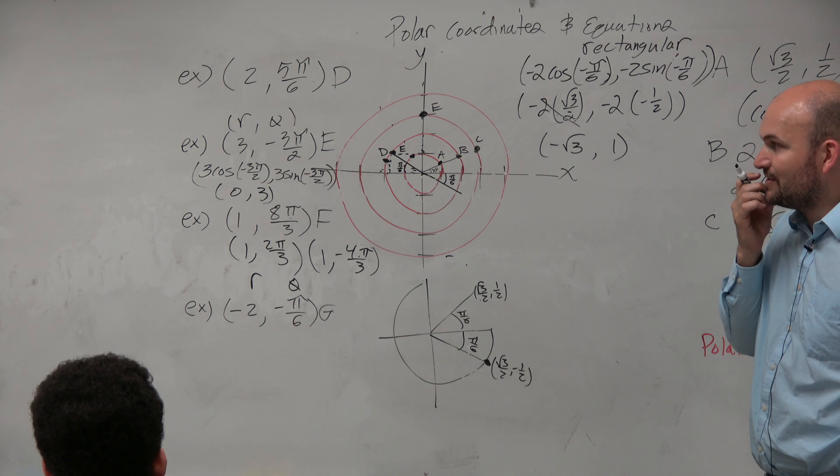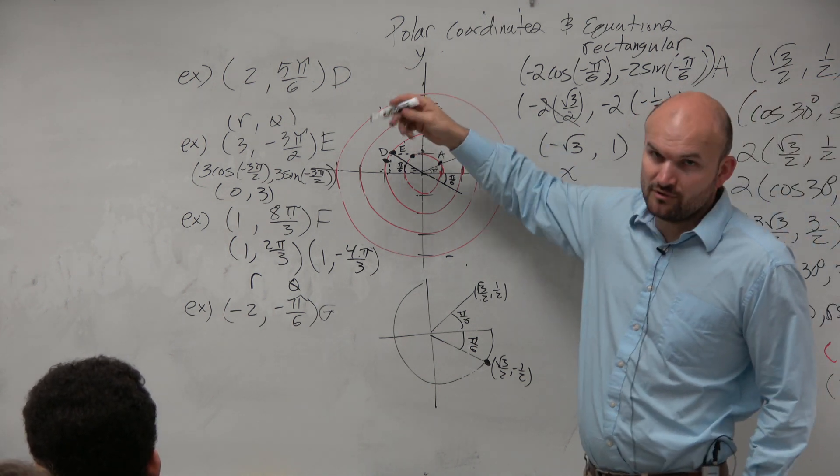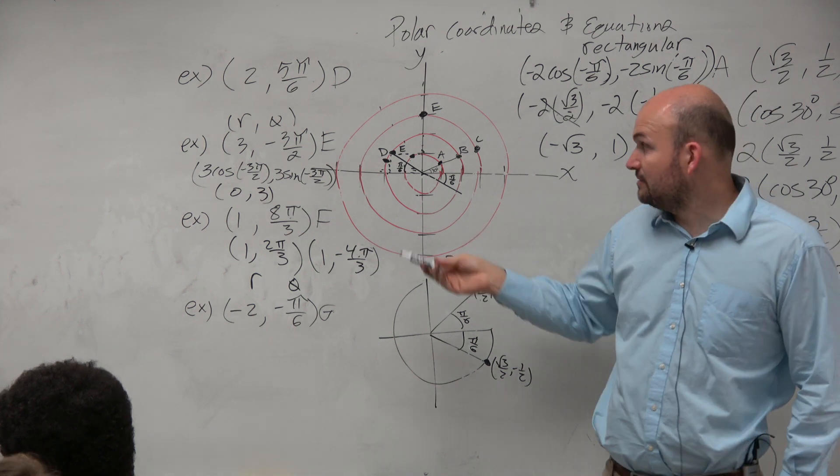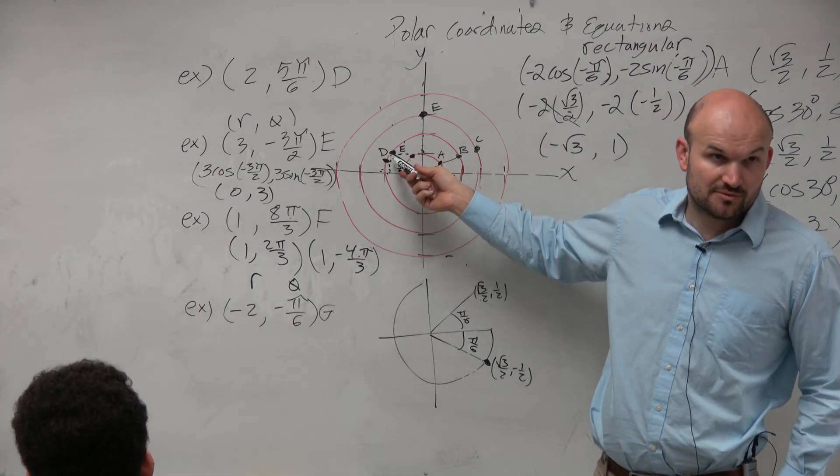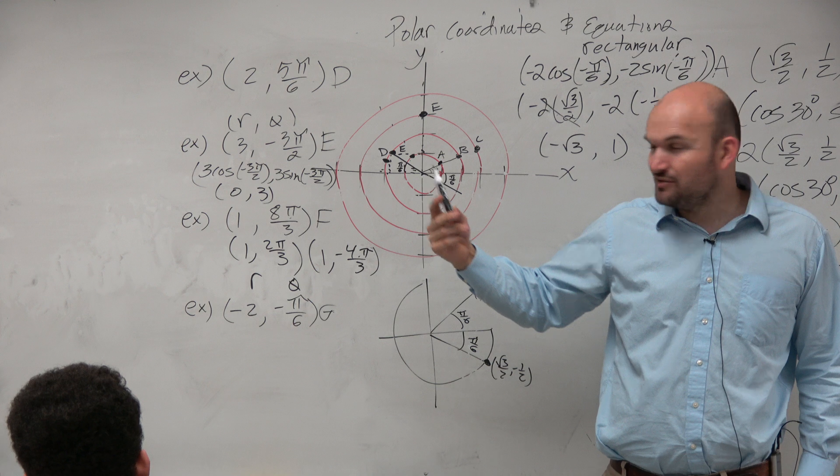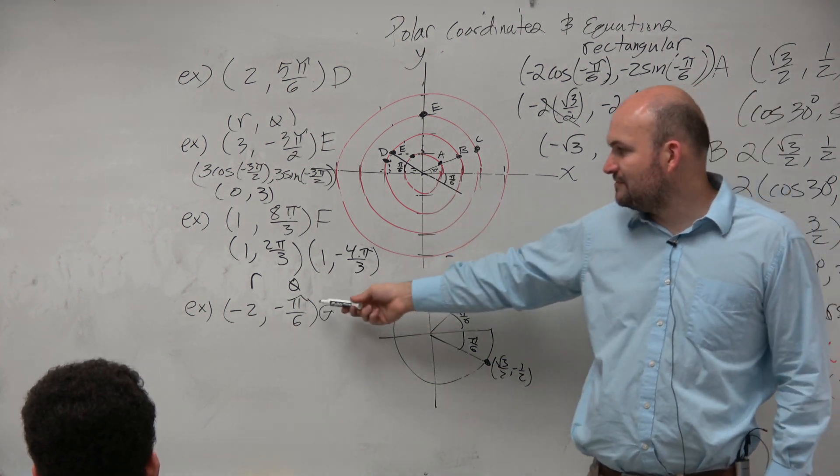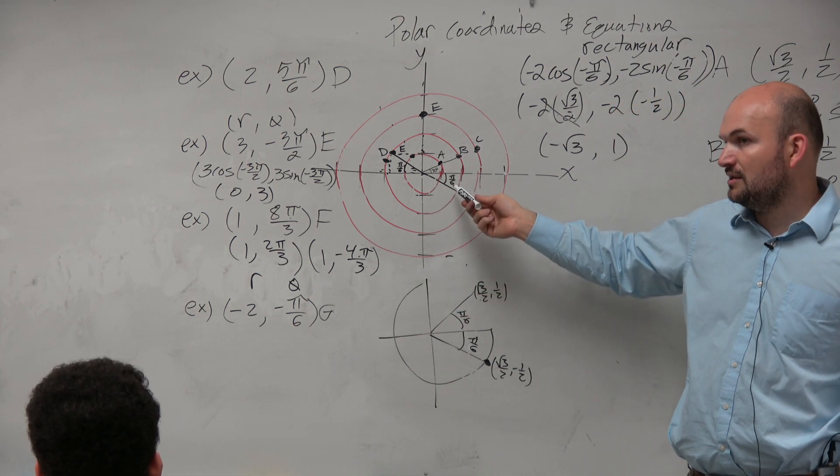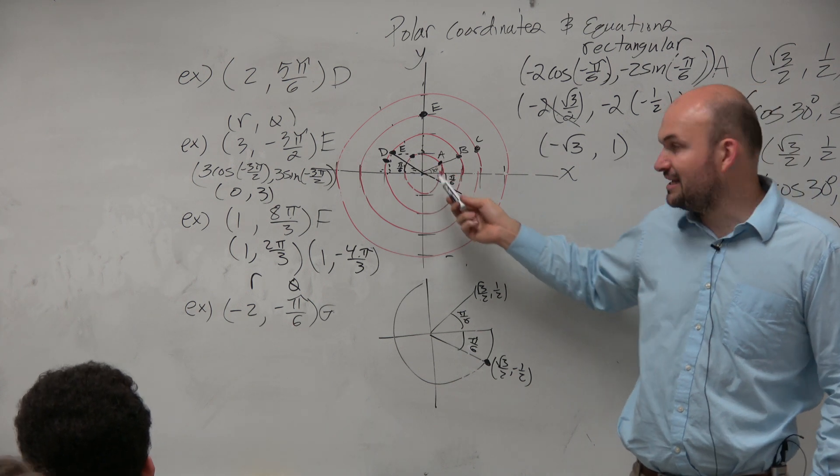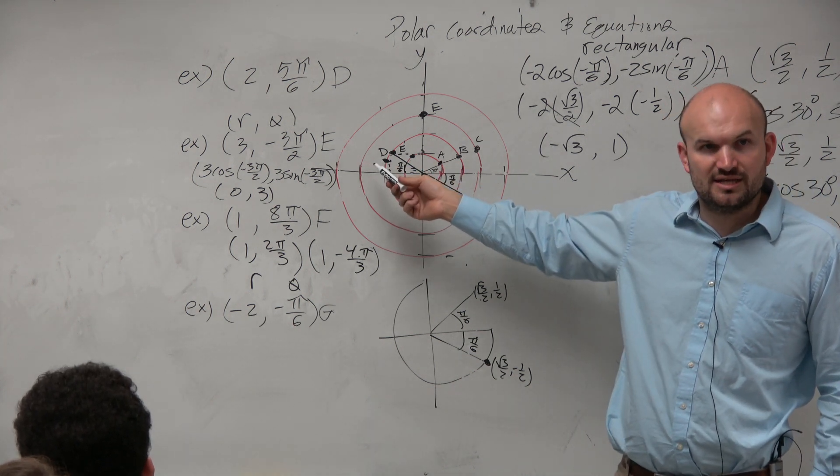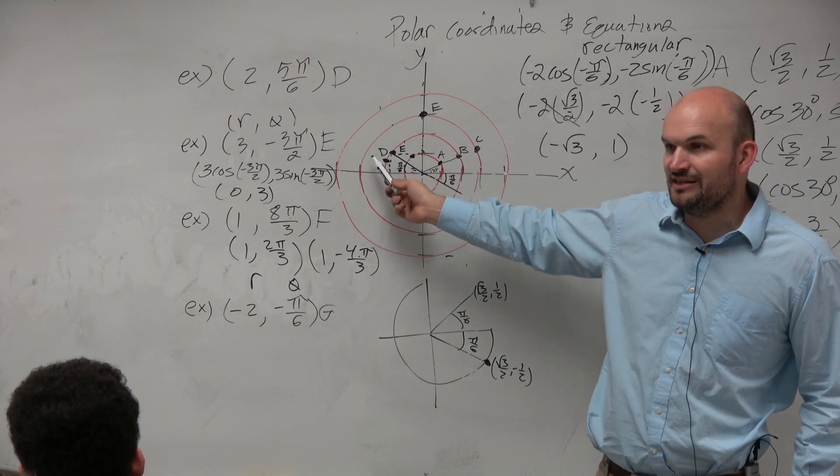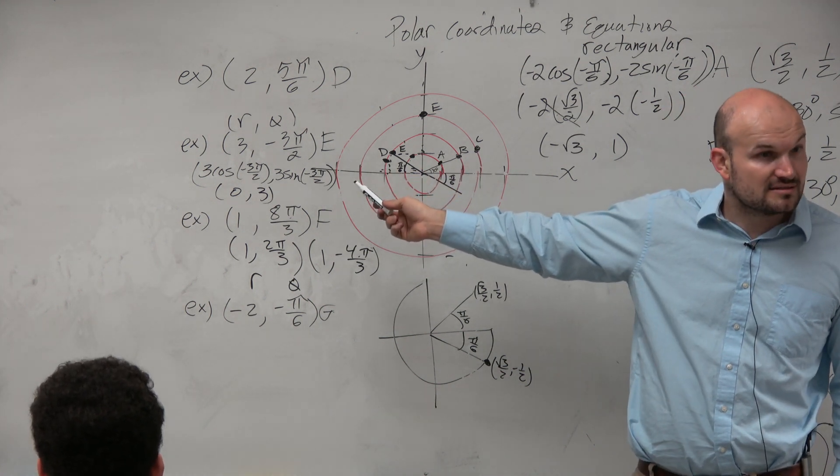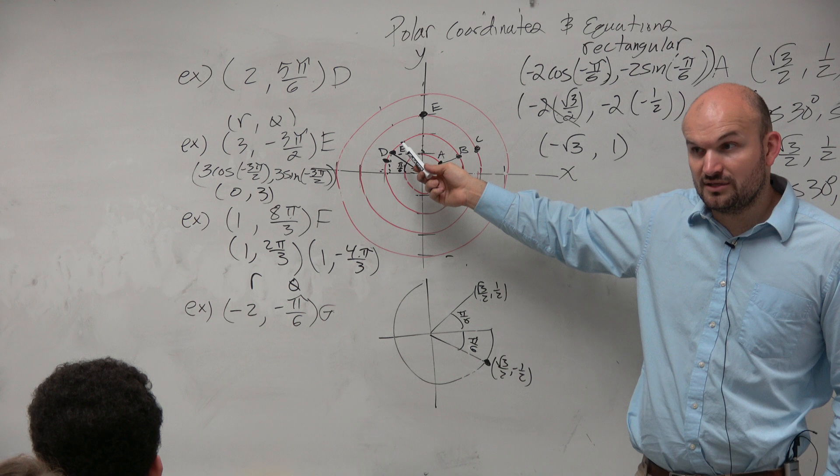So basically, first of all, to answer your question, to graph this correctly, that is the correct point. That's where it's graphed. But it kind of gets confusing because if you graph negative pi over 6, that takes you over here. So what is this 2? It looks like it's a reflection about the origin, doesn't it? It's reflected about the x-axis and then reflected about the y-axis. Yes? Yes? Yes? Doesn't it look like it's happening?